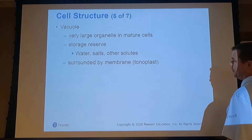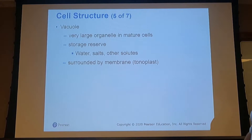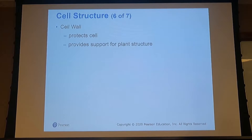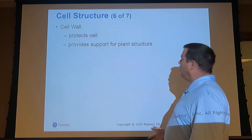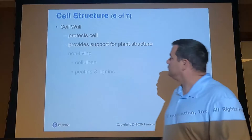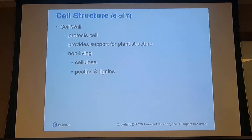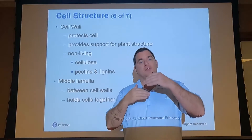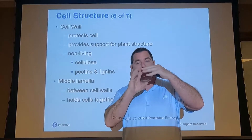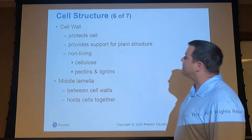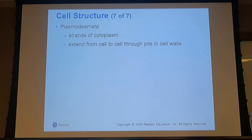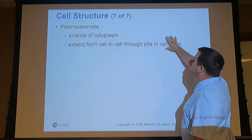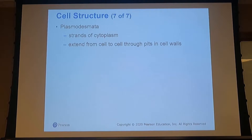The vacuole functions as storage containing water and salts, surrounded by a membrane, and takes up the most space in the cell. The cell wall provides support and structure for the plant; it is not a living thing but a structural component made up of pectins, lignins, and cellulose. The plasmodesmata are strands in the cytoplasm that also extend from the cell into the cell wall, giving the wall its structure.